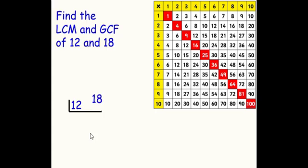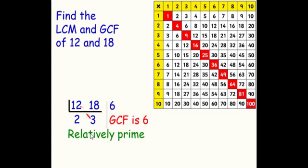The quickest way would be to factor out the GCF, which is 6. 12 divided by 6 is 2. 18 divided by 6 is 3. GCF is 6. LCM is 36.